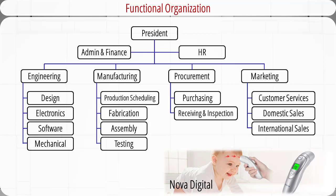The design, electronics, software, and mechanical departments within the engineering division are responsible for creating the specifications to meet the needs of customers. The production scheduling, fabrication, assembly, and testing departments within manufacturing are responsible for producing the thermometers according to design specifications. The purchasing and receiving departments acquire all materials from suppliers and vendors. The customer service, domestic, and international sales departments within marketing are responsible for determining product demand and price, identifying distribution channels, providing customer support, and collecting customer feedback.